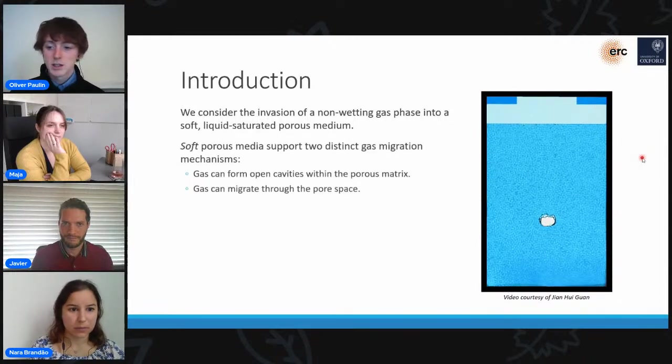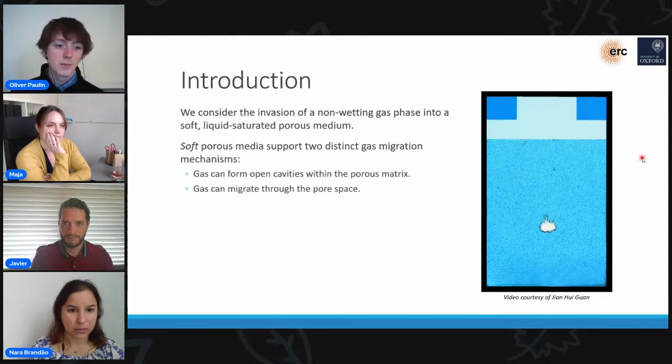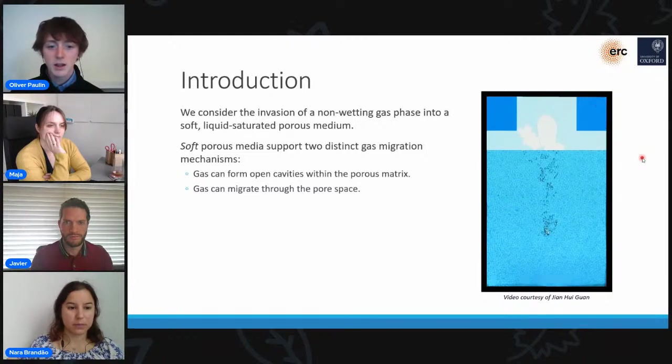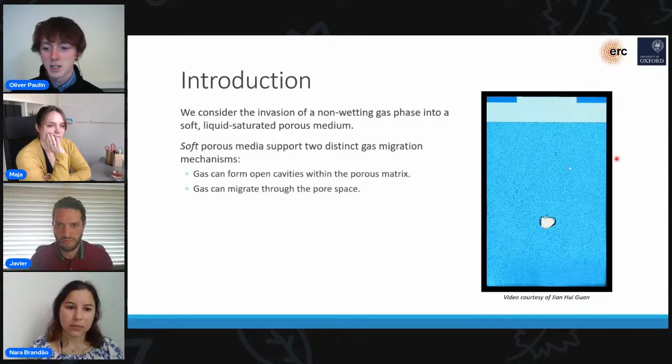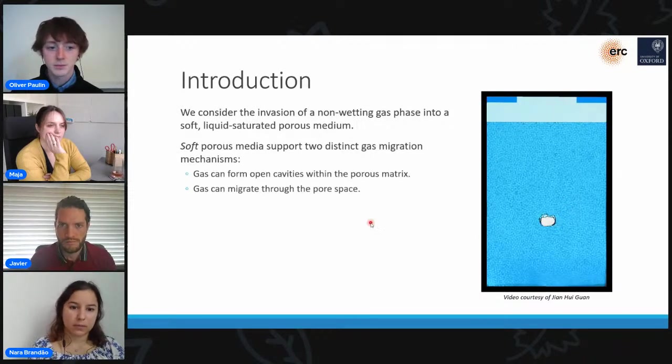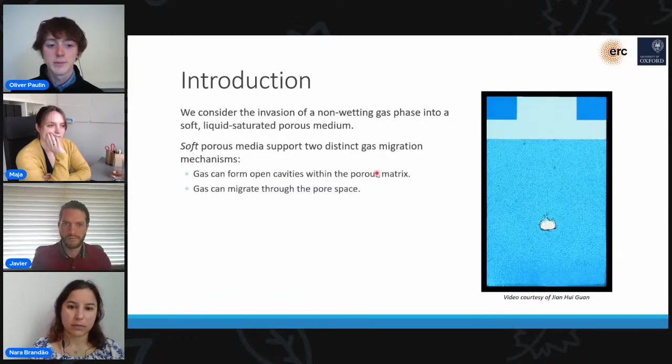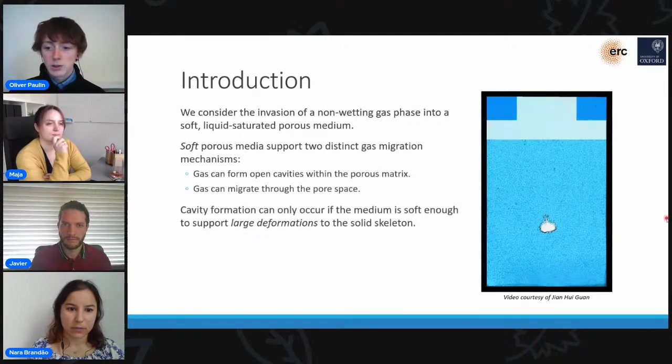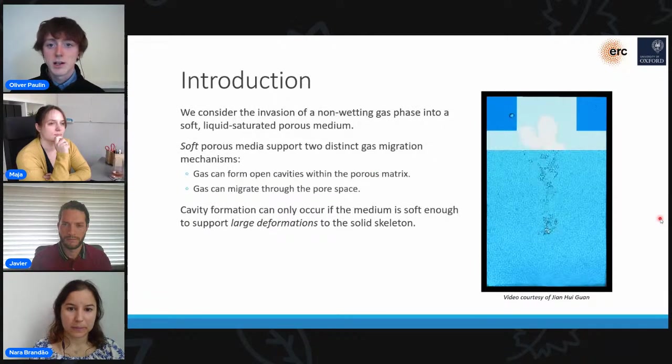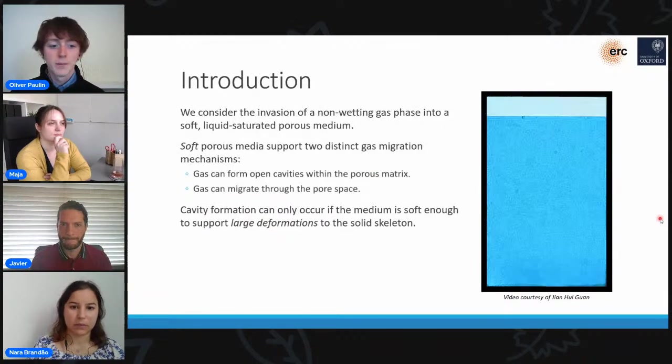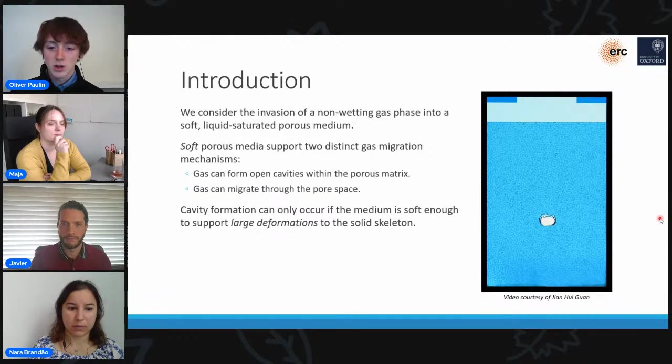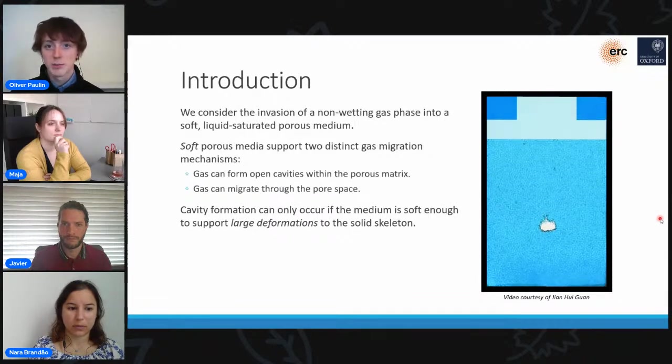So what you can see in this video is that these soft porous materials support these two distinct gas migration mechanisms. Either the gas can form open cavities within the solid packing by displacing the solid grains like you can see here, or it can migrate through the pore space itself by displacing pore liquid. In order to form these open cavities, the rest of the solid grains have to be compressed into a smaller volume, which means that this cavity formation can only occur if the solid skeleton is soft enough to support these large deformations.